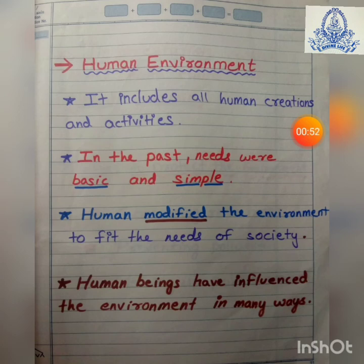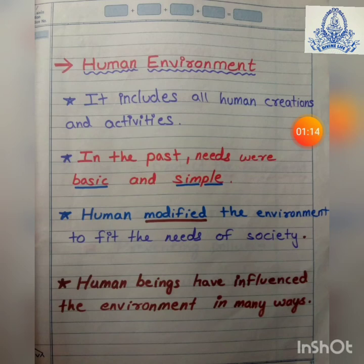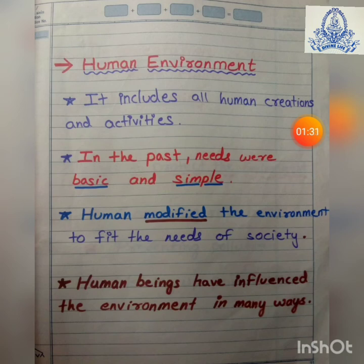Human beings have influenced the environment in many ways. Due to overpopulation, their needs increased and they started to fulfill those needs. They cleared forests to get more land for agriculture and used the slash-and-burn agriculture method. In this method, land was cleared, vegetation was cut and burned — the layer of ash provides nutrient-rich land to fertilize crops. Apart from that, animals were killed for food and other needs like leather and skin.